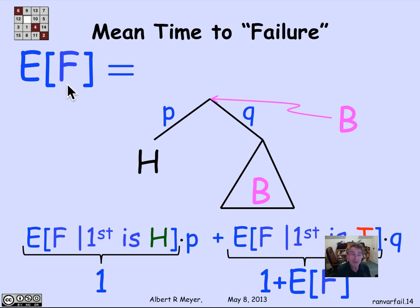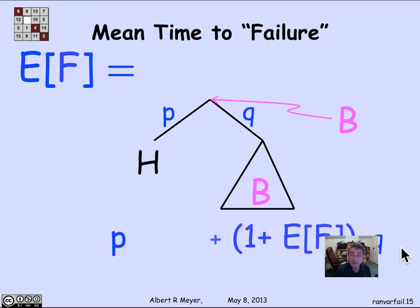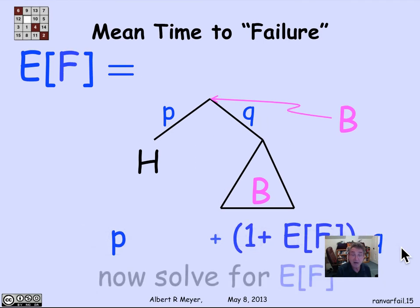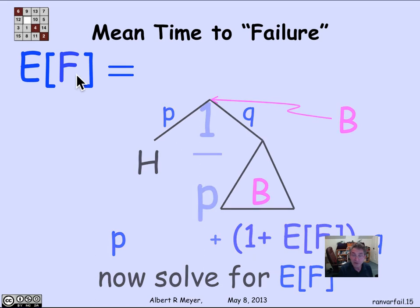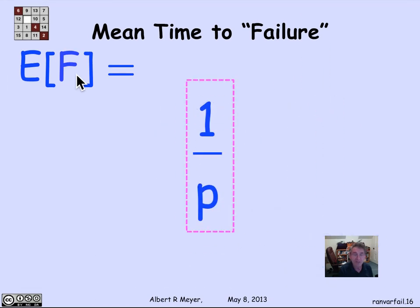This gives a simple arithmetic formula: the expectation of F equals 1 times P plus (1 plus E[F]) times Q. Expanding, with P plus Q equal to 1, and collecting the E[F] terms, solving for E[F] confirms again that the expectation of F equals 1 over P.